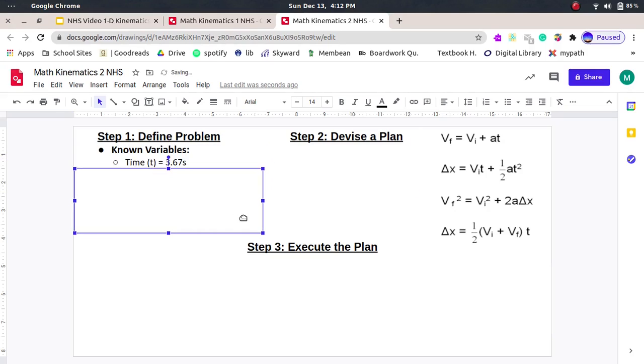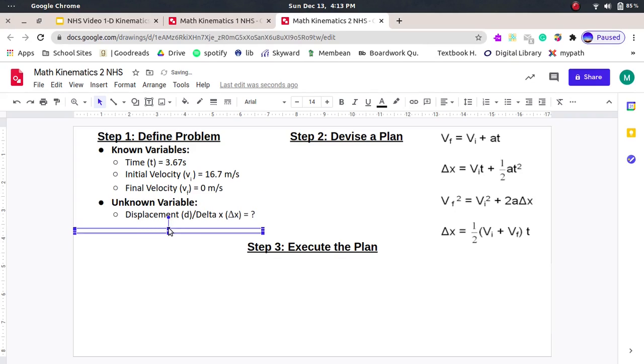So let's start with our known. We know time is 3.67 seconds. We know initial velocity is 16.7 meters per second. And we know the final velocity is 0 meters per second. And then what are we trying to solve for? We're trying to solve for displacement, delta x, really just the distance.